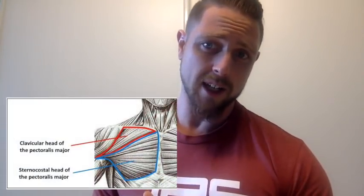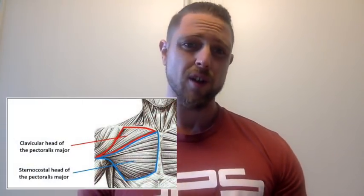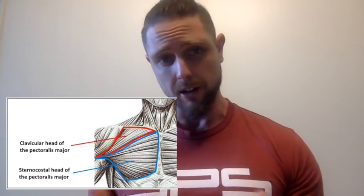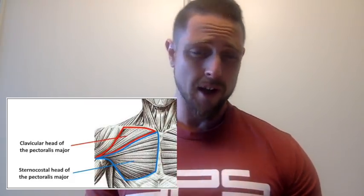First up, the chest. The anatomy of the chest is pretty simple — it's got two heads: the sternal head and the clavicular head. The sternal is the lower chest and the clavicular head is the upper chest. Now we can't isolate any particular portion of the chest; however, there are some movements that will train certain fibers more so than others.